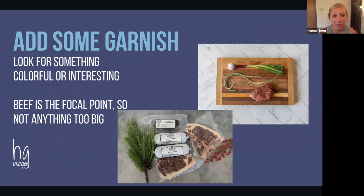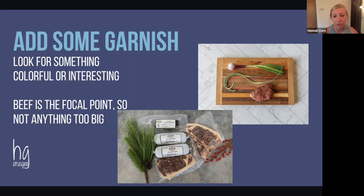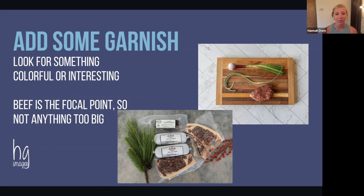Last but not least: add some garnish. This is where your creativity really gets to flourish, and it's one of my favorite things about photographing food products. I had a blast going to the farmer's market and picking out colorful, creative things to pair with the steak. For Christmas bundles, we put in a little greenery and some berries. Just don't forget that beef is the focal point — you don't want anything too big or obnoxious that takes away from it. Beef is kind of brown, so adding different colors and textures really makes the photo pop.